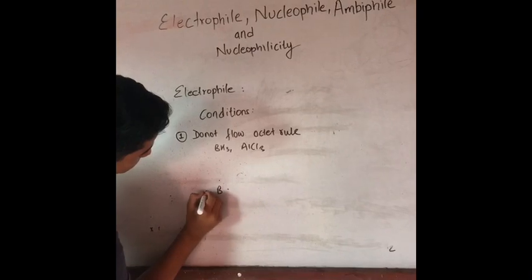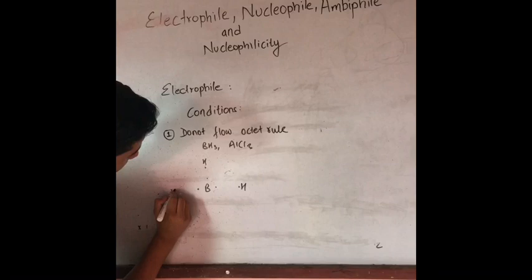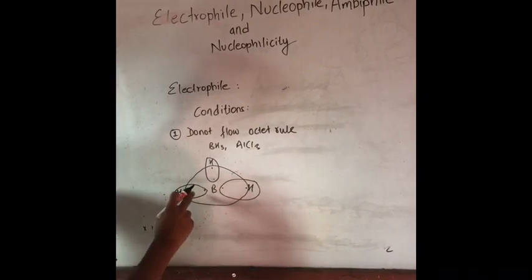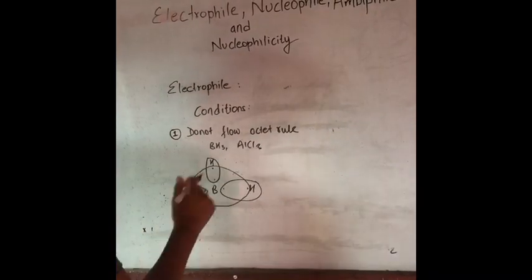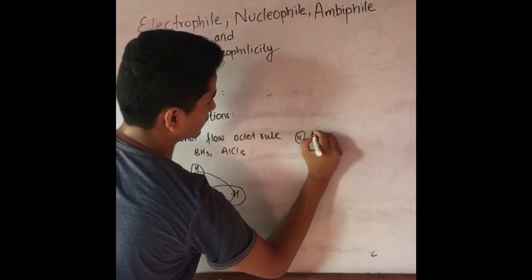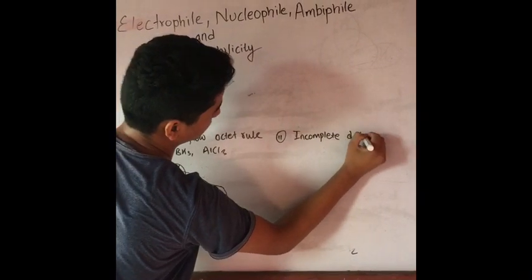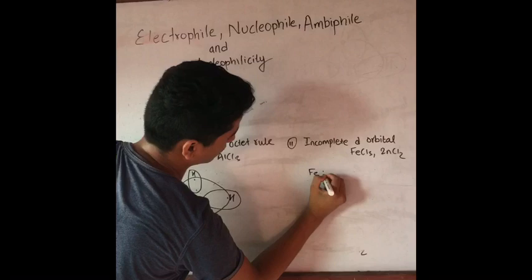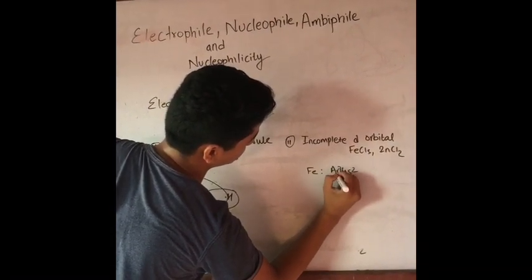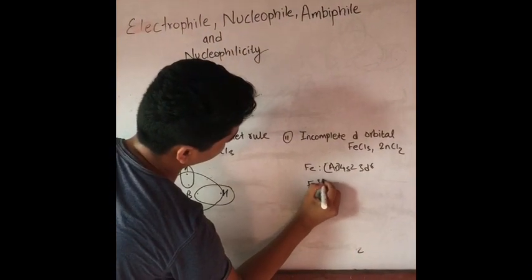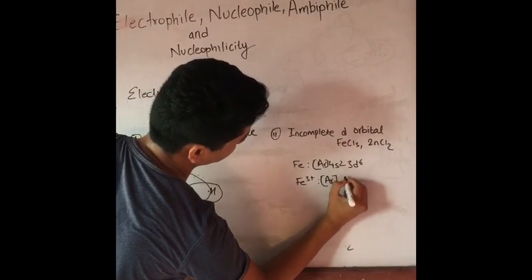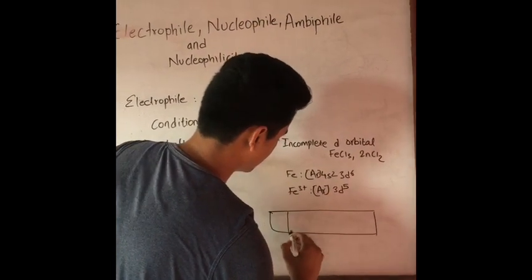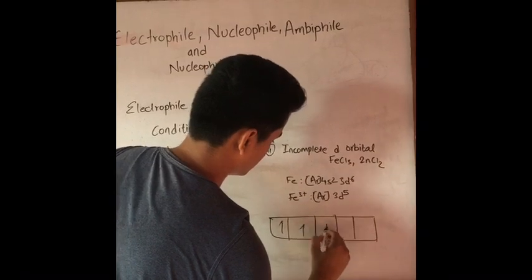These items are incomplete — they have only 3 bonding pairs, giving 6 electrons, not 8. For example, FeCl3: iron has the configuration [Ar] 4s2 3d6, and Fe3+ has an incomplete 3d shell, making it electron-deficient and thus an electrophile.